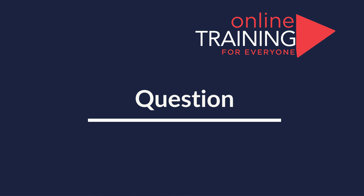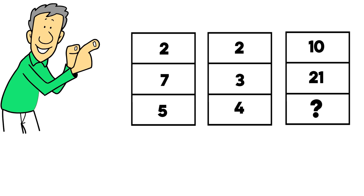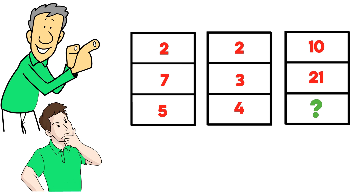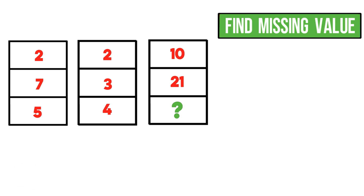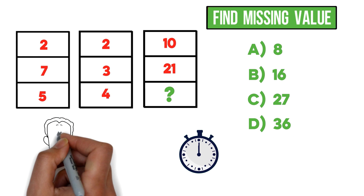I'm excited to share with you a question that tests your pattern recognition skills. You're presented with 3 columns, each with 3 numbers. In the first column: 2, 7, 5. In the middle column: 2, 3, and 4. In the rightmost column: 10, 21, and one number missing. You need to find the missing value marked by a question mark. Your four choices are: choice A — 8, choice B — 16, choice C — 27, and choice D — 36.